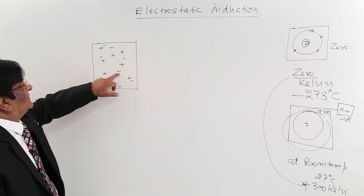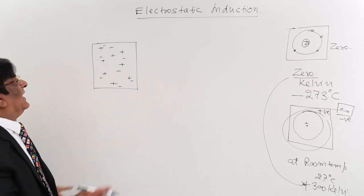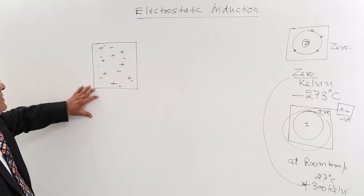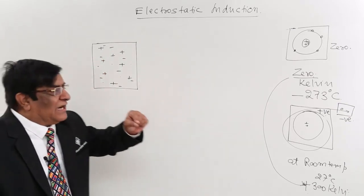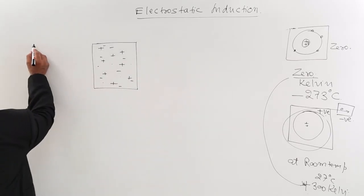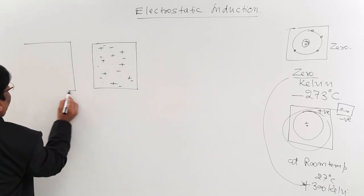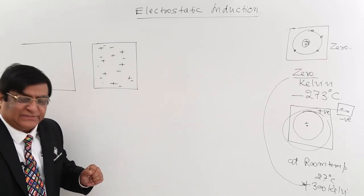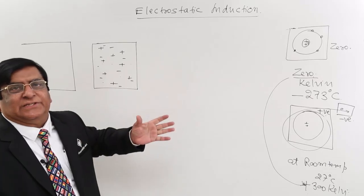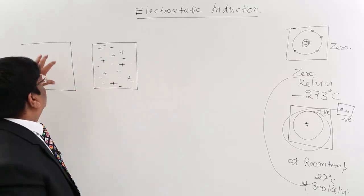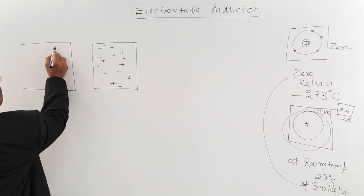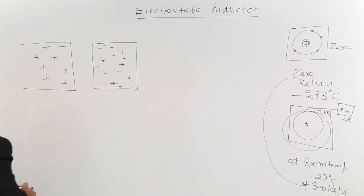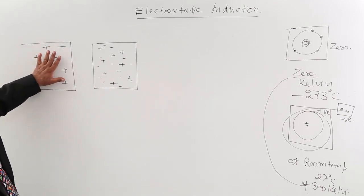All these negatively charged electrons keep moving here and there, spending time everywhere. Now I do one operation: I charge a glass rod and keep it close to this body. This glass rod has certain excess positive charges — it has lost certain electrons, so the number of positive charges is more. We are showing only the excess charges, which are positive charges in this case.